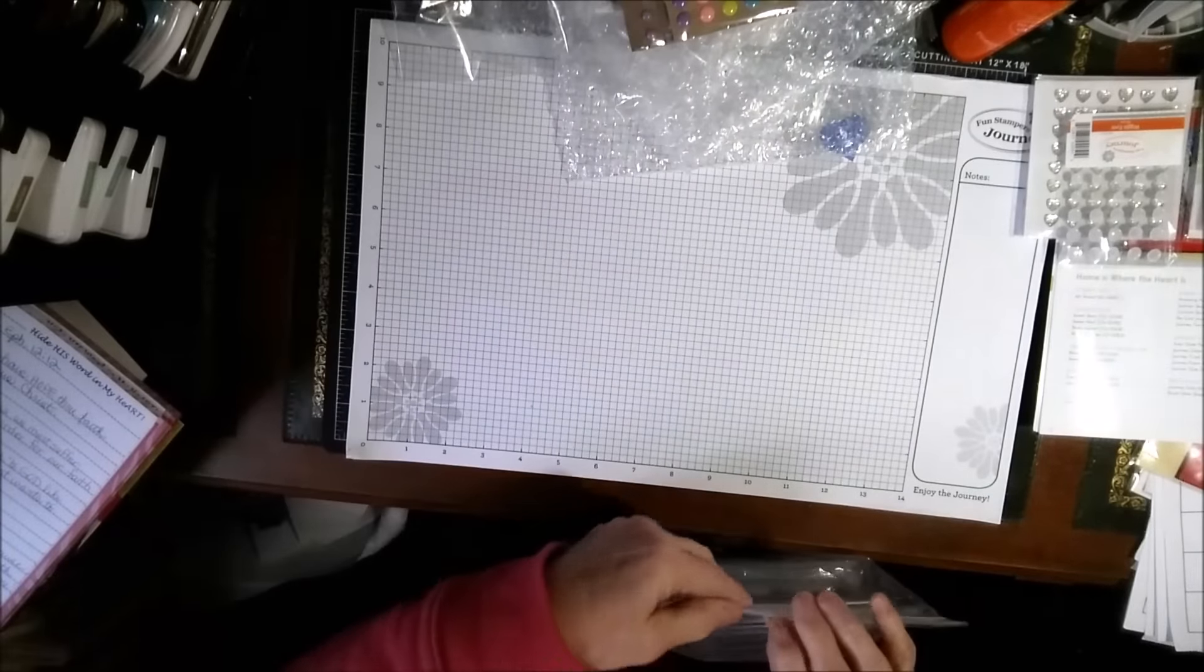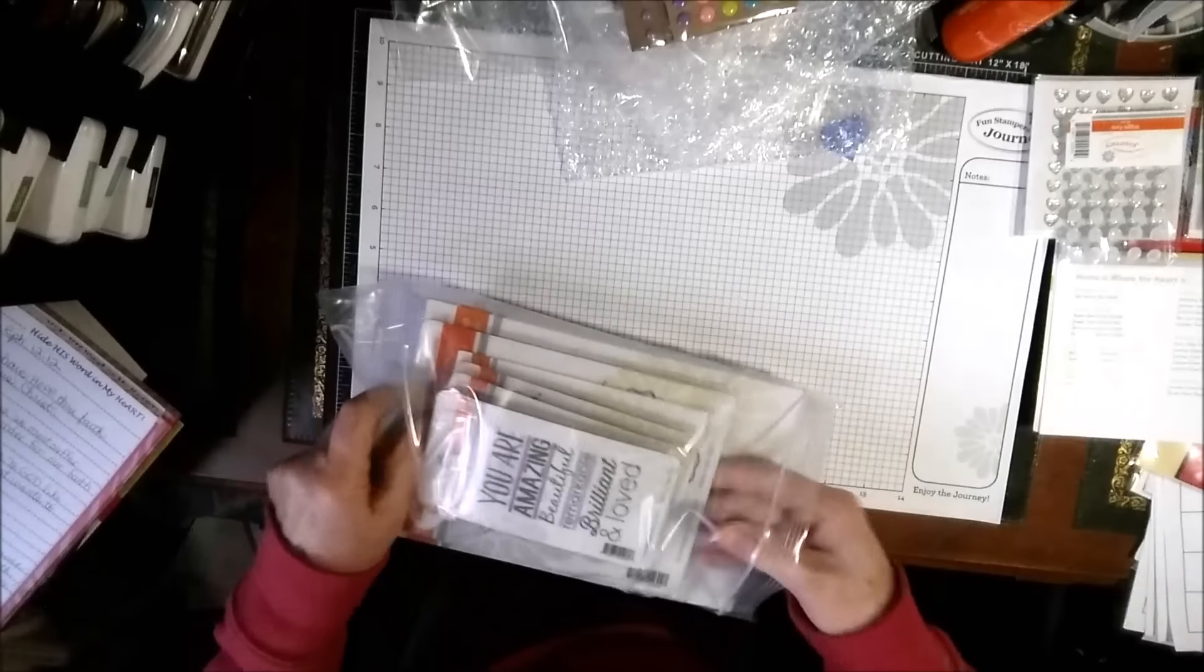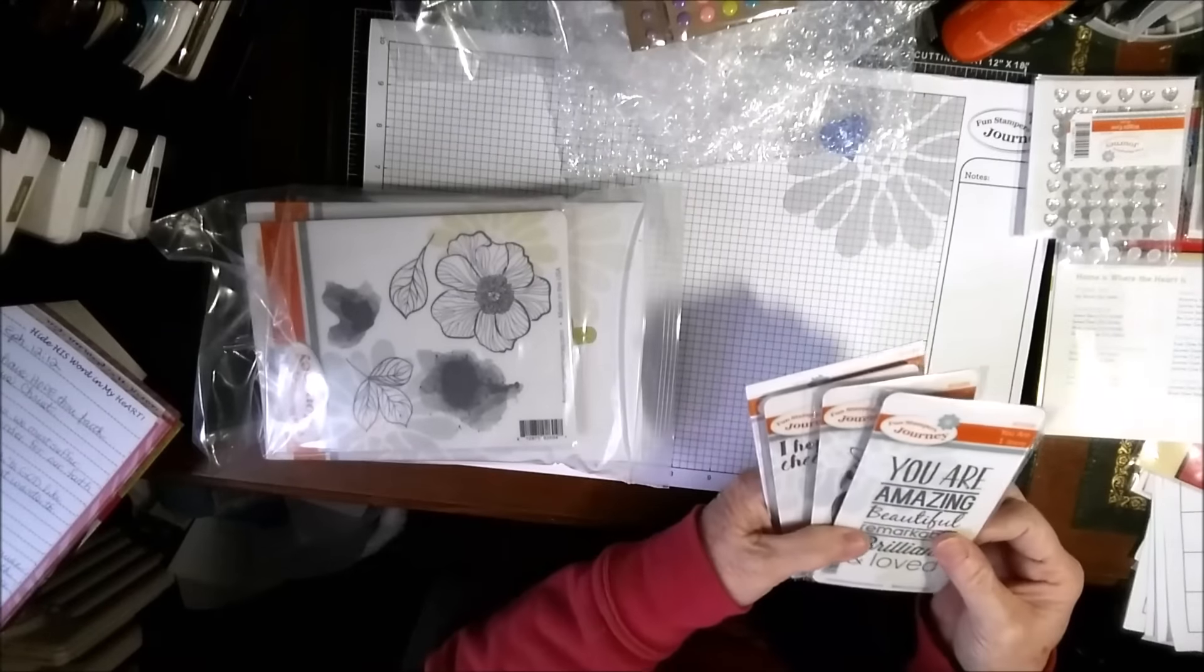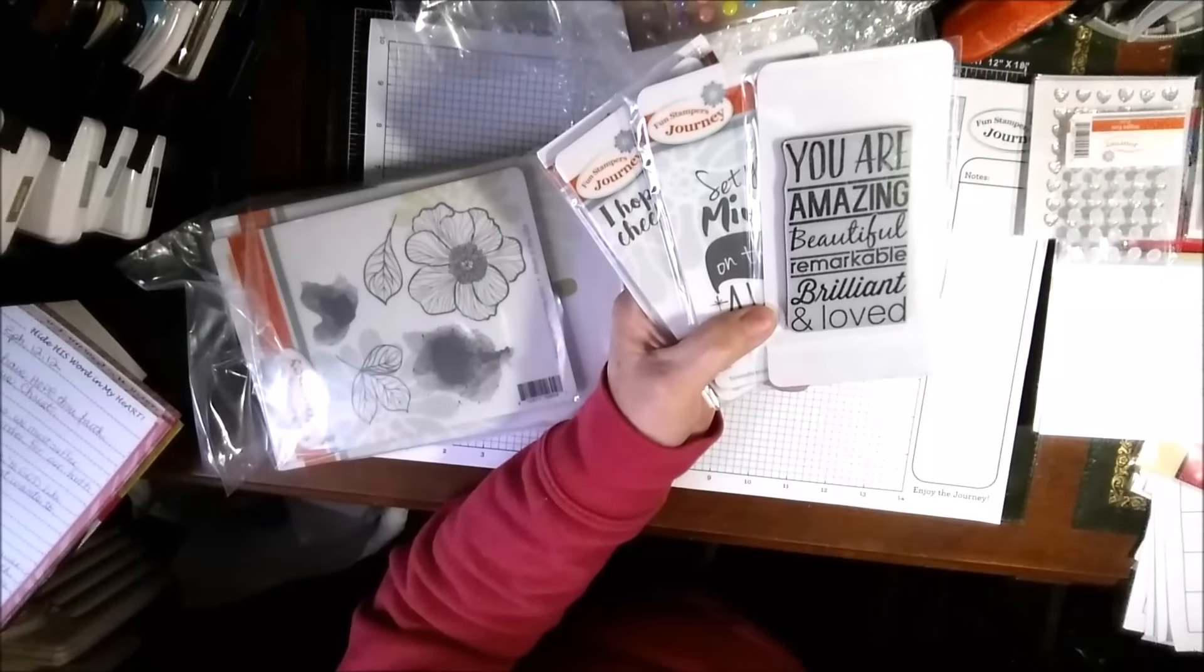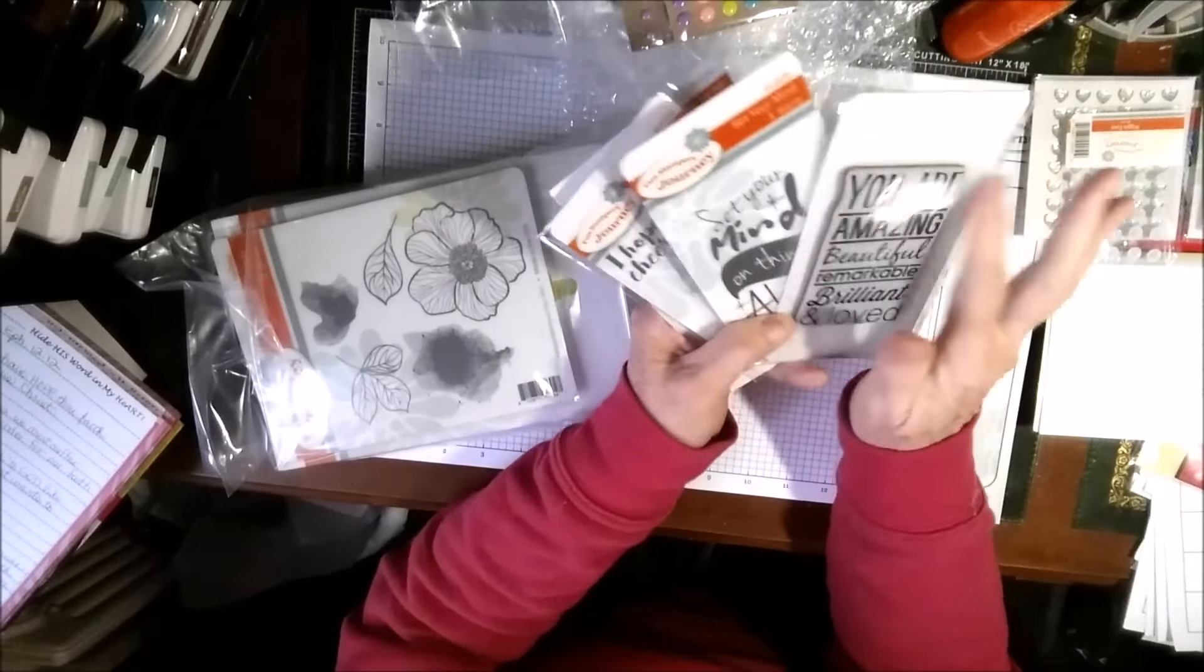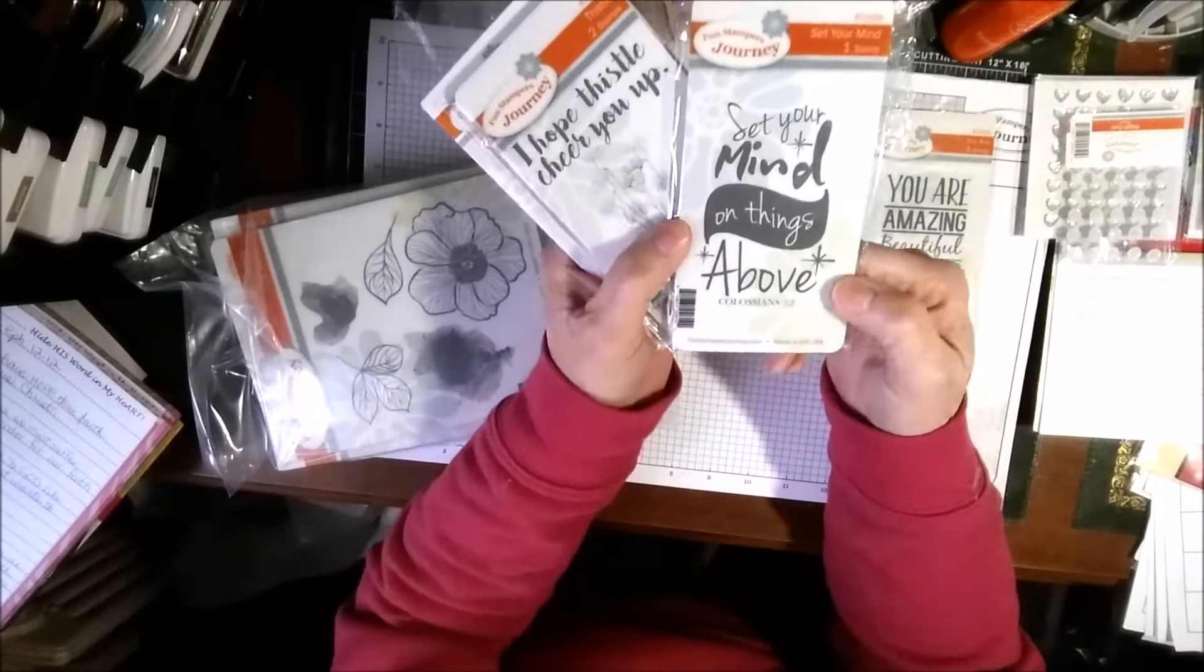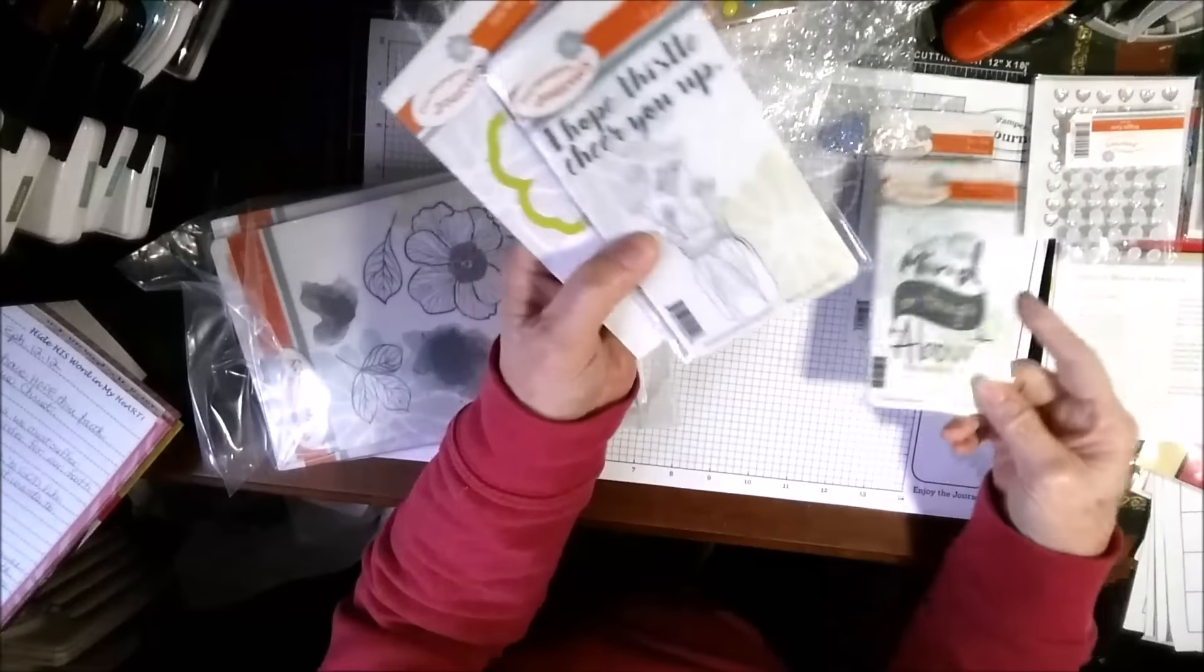And now I have a big bag. What's in the big bag? Oh, yeah. Let me pull these out first. I also got the UR stamp. And that's where it is. The size of it on the back. It says, you are amazing, beautiful, remarkable, brilliant, and loved. And I can just see this with a different color stripe under each one of those. But this is an ATS. This is Colossians 3:2. Set your mind on things above. That was something that I thought would be good. I like this one. This one says, I hope thistle cheer you up. And it's a picture of a thistle. And I think that's cute.